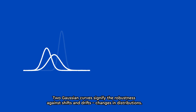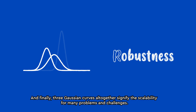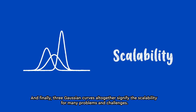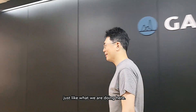Two Gaussian curves signify the robustness against shifts and drifts, changes in distribution. And finally, three Gaussian curves all together signify scalability for many problems and challenges, just like what we are doing here.